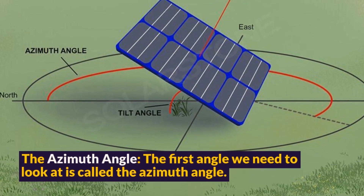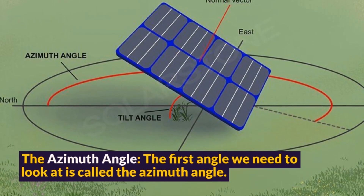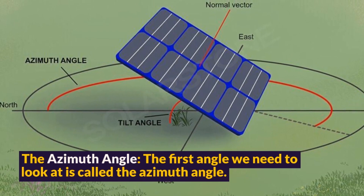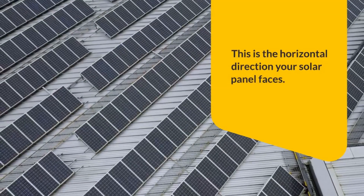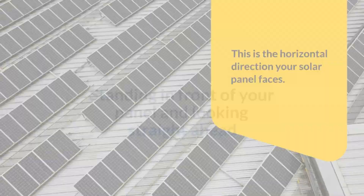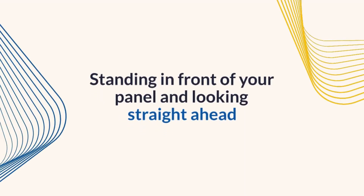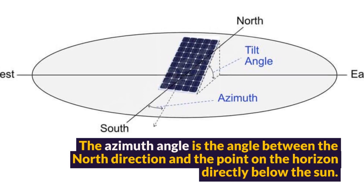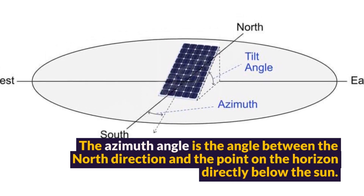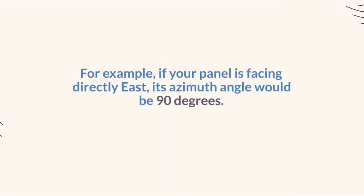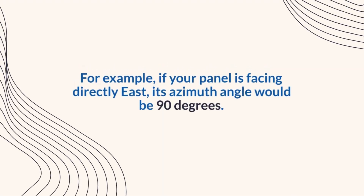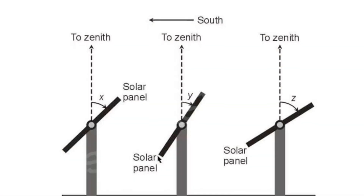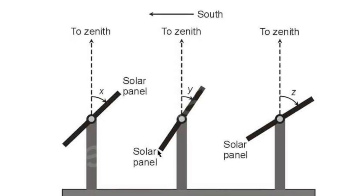The Azimuth Angle. The first angle we need to look at is called the Azimuth Angle. This is the horizontal direction your solar panel faces. Imagine standing in front of your panel and looking straight ahead. The Azimuth Angle is the angle between the north direction and the point on the horizon directly below the sun. For example, if your panel is facing directly east, its Azimuth Angle would be 90 degrees. If it's facing south, the Azimuth Angle would be 180 degrees.